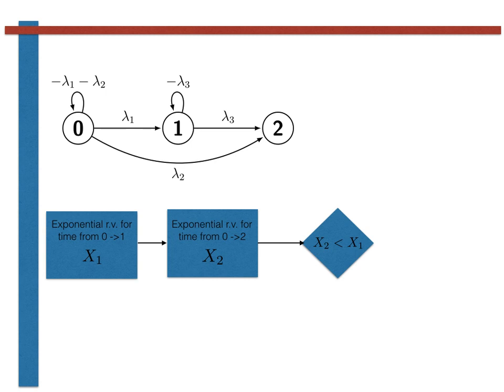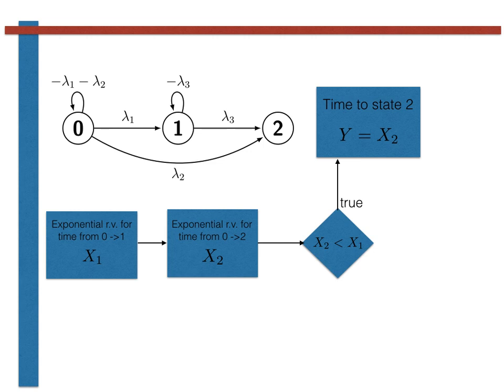In particular, if X2 is less than X1, we transition to state 2, because the transition to state 2 would happen before we had the time to wait for the transition to state 1.